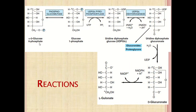The reactions of the Uronic Acid Pathway begin with glucose-6-phosphate, which is converted into glucose-1-phosphate by mutase enzyme. Glucose-1-phosphate is then converted into UDP glucose by UDP glucose pyrophosphorylase, utilizing UTP and releasing pyrophosphate. So from UTP, UDP is transferred onto glucose to produce UDP glucose, which is required for various reactions of glycogen metabolism.